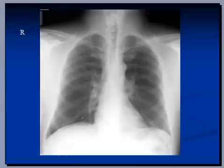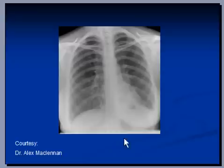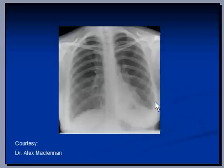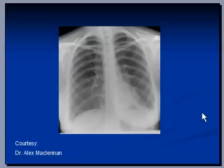If you look at this X-ray, the left costophrenic angle is blunt — it is not visible and not as clear as it should be. So this patient has a small amount of left-sided pleural effusion. Also notice there is an area of consolidation here, which is probably causing the pleural effusion as well.